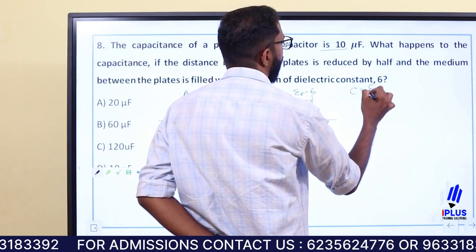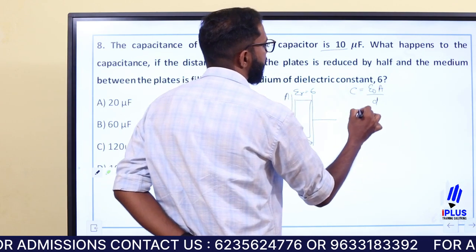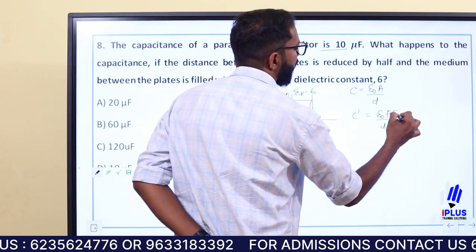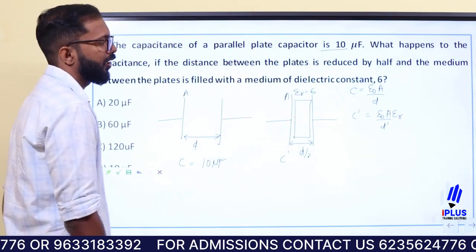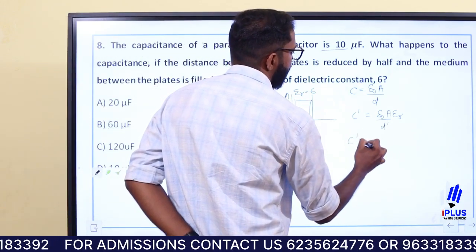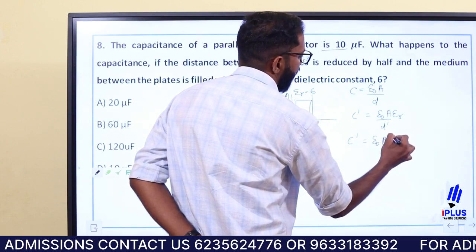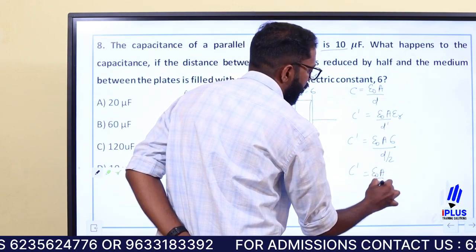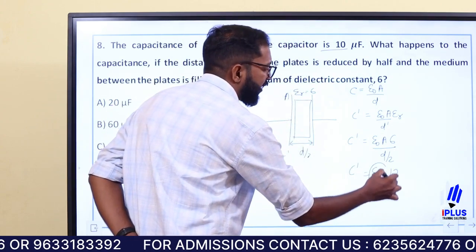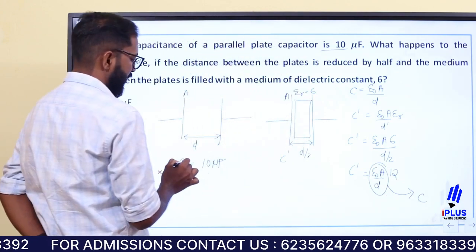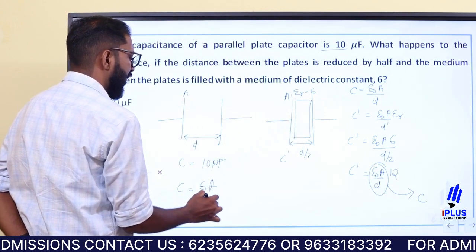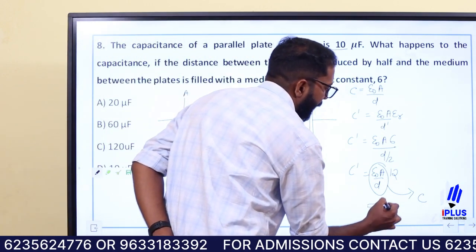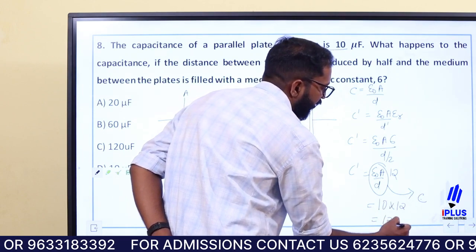The expression for capacitance is C equal to ε₀A by d. The new capacitance C dash is equal to K·ε₀A by d dash, where d dash is d/2 and K is the dielectric constant 6. So C dash equals 6·ε₀A divided by (d/2), which gives C dash equal to 12·ε₀A/d, meaning C dash equals 12 times the original capacitance, giving 120 microfarad.